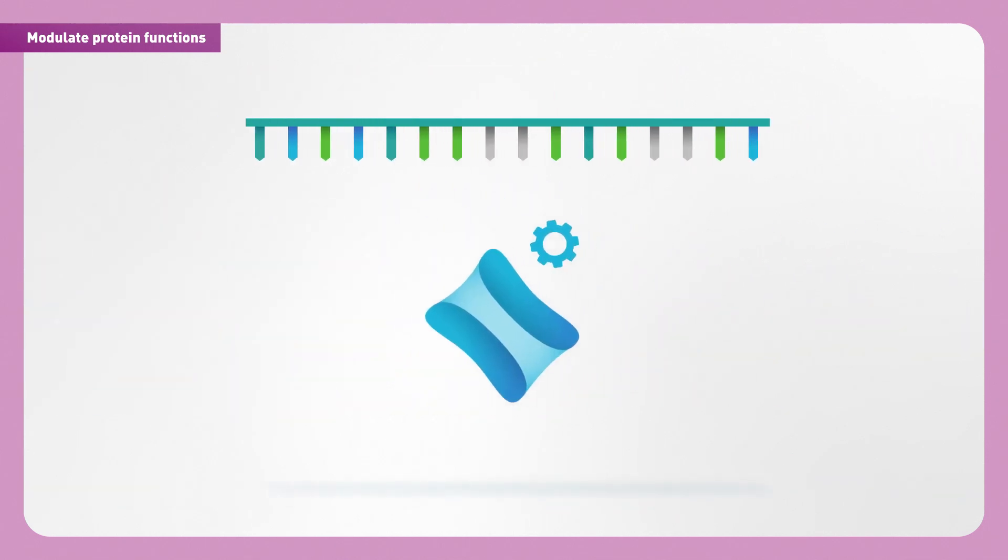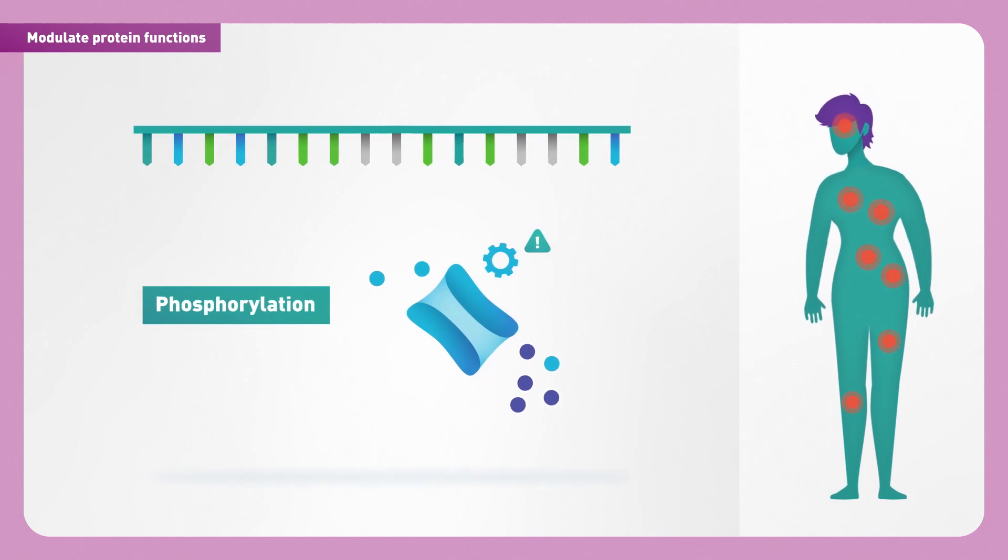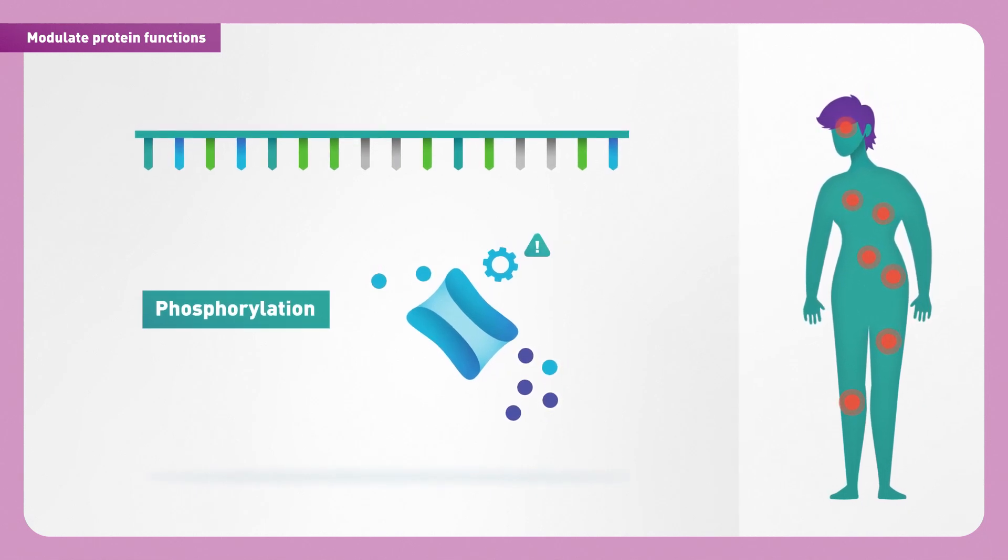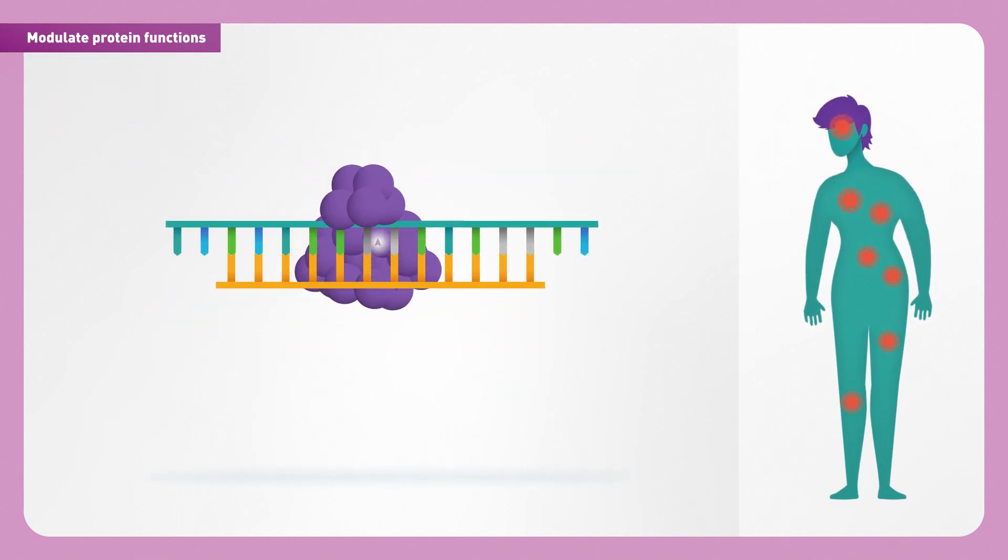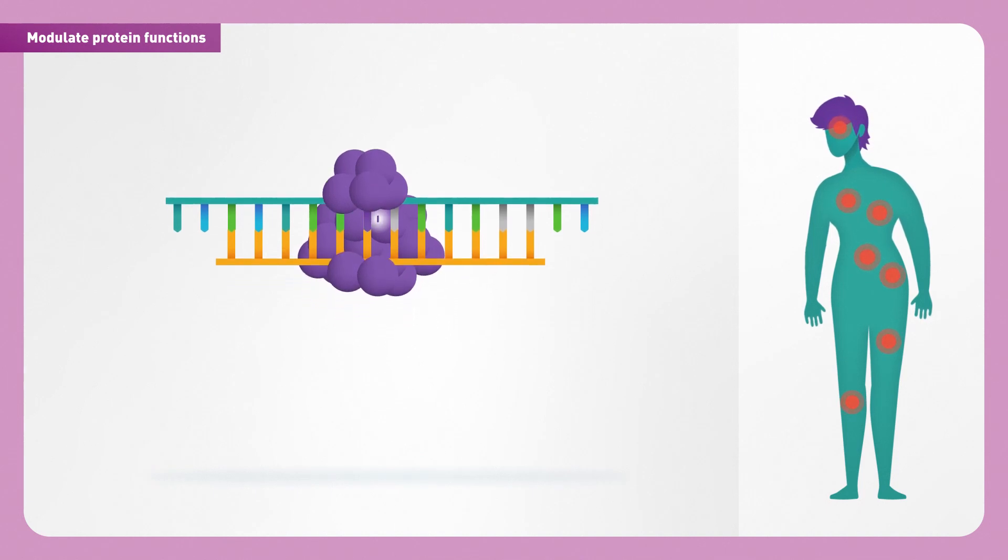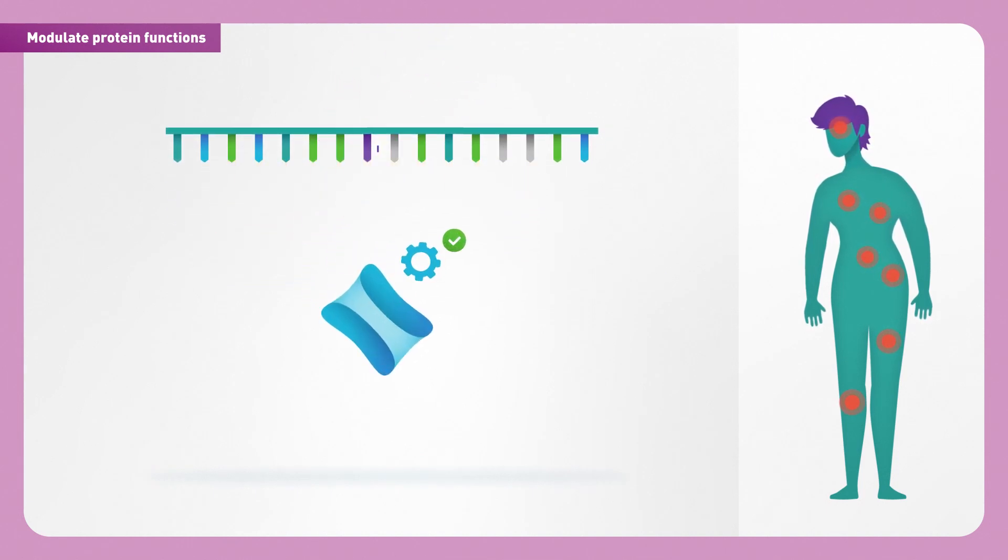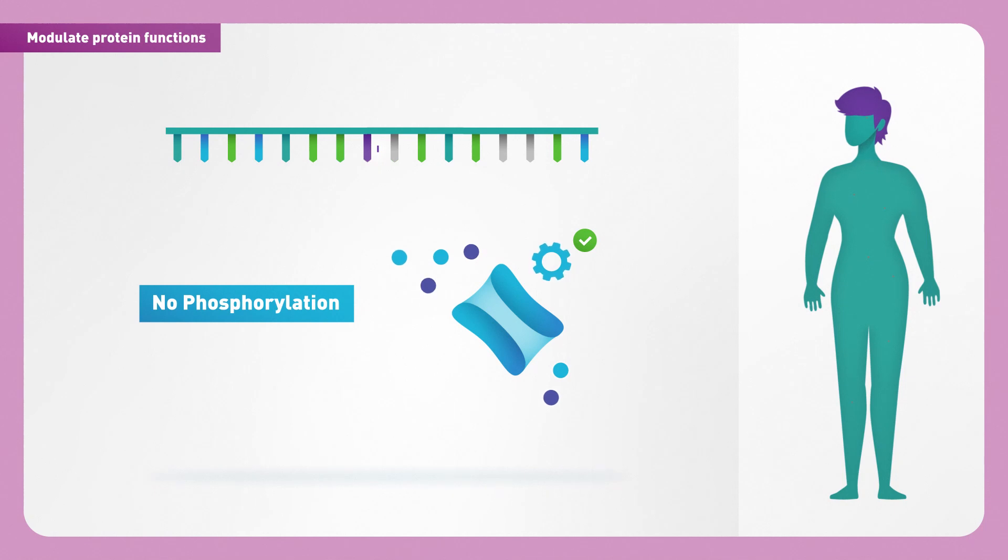One common modification of channels is called phosphorylation. This modification can change how the channel transports ions, which in some cases results in a disease. With targeted A-to-I editing, Axiomer changes the structure of a newly created channel. This can prevent the channel from being phosphorylated, thereby adjusting its activity to meet the body's requirements.